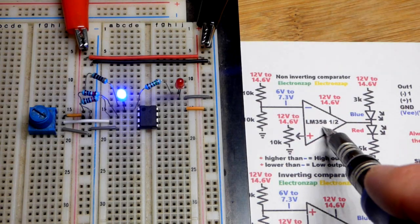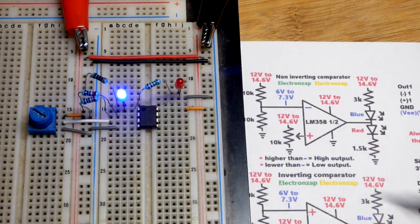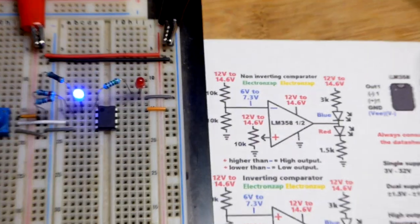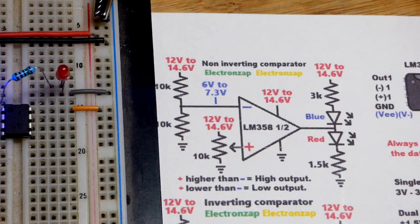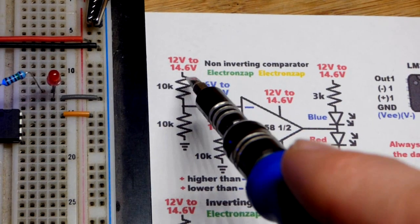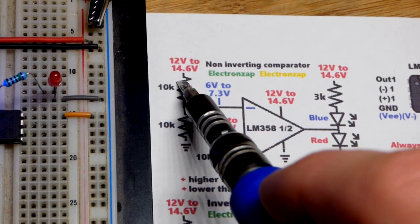So now in this video we're going to look at the op amp comparator again. I've recently done videos on this but that was with 5 volts. We're going to bump up the voltage to 12 volts up to about 15 volts.